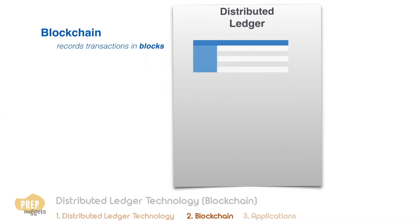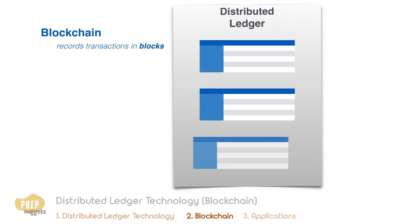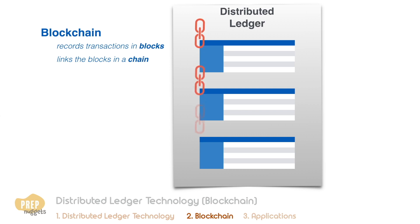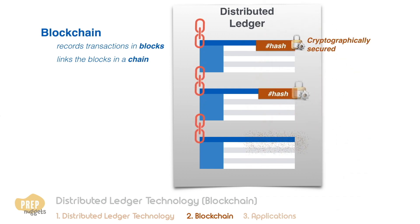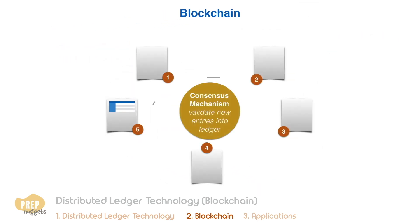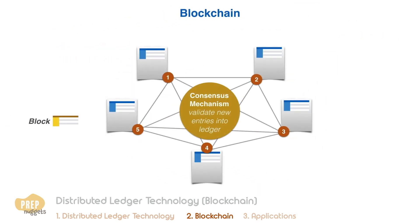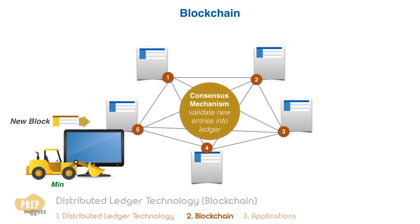A blockchain is a distributed ledger that records transactions sequentially into blocks and links these blocks in a chain. Each block has a cryptographically secured hash that links it to the previous block. In order to add a new block to the chain, the consensus mechanism requires some of the computers on the network — known as miners — to solve a cryptographic problem.